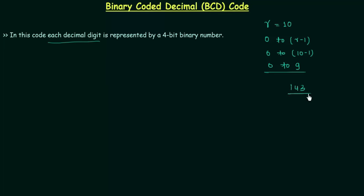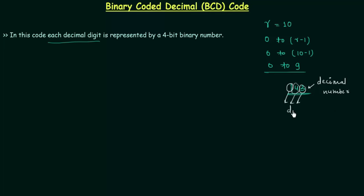143 is not a decimal digit — it is a decimal number. In 143 we have 3 decimal digits: 1, 4, and 3. So a decimal number contains multiple decimal digits. By using binary coded decimal we will represent 0 to 9, the decimal digits, by 4-bit binary numbers.